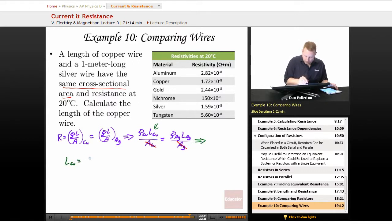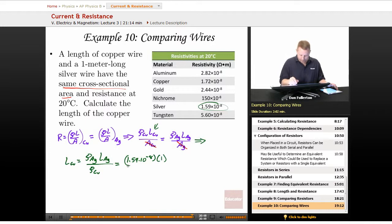That means that the length of our copper wire is going to be equal to the resistivity of silver times the length of the silver wire divided by the resistivity of copper. Now I can substitute in my values. The resistivity of silver I get from my table, that's going to be 1.59 times 10 to the minus 8 ohm meters. The length of my silver wire is 1 meter. And the resistivity of copper from my table is 1.72 times 10 to the minus 8 ohm meters. A little bit of division and calculator work and I come up with the length of about 0.924 meters.